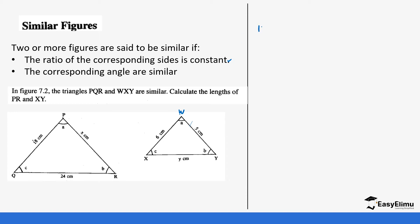You start with 18 divided by 6, which gives you 3. And then the next side is X centimeters over 5, and finally we have 24 over Y. So if we look at the ratio, the answer to the ratio of the first side — QP to XY — is 3, and this ratio is supposed to be the same for the other sides.